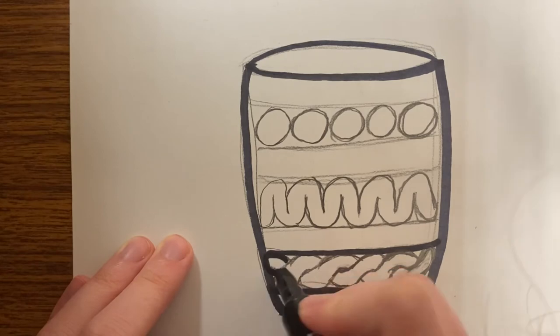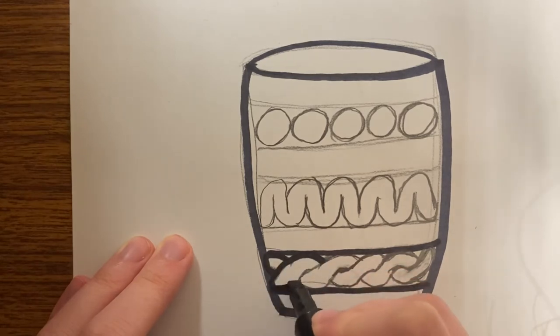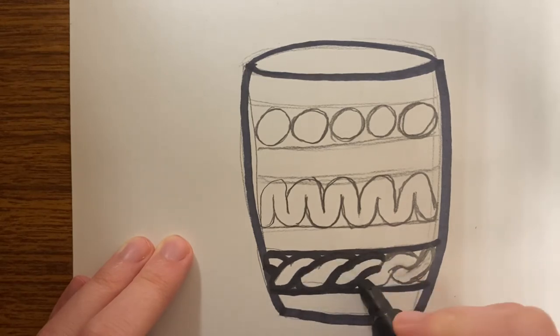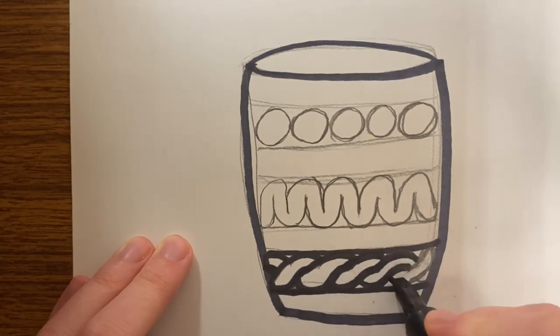And then I will go over that twisted coil. And it just makes it look a lot better. It's a lot easier to draw with the marker as well if you do the pencil first.